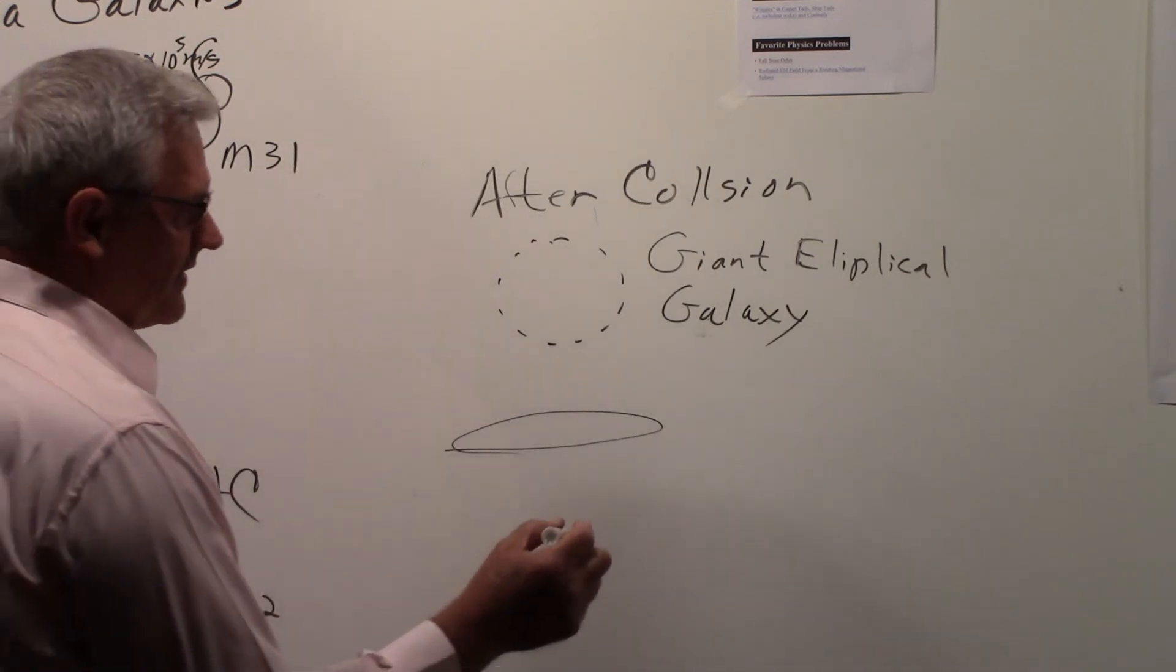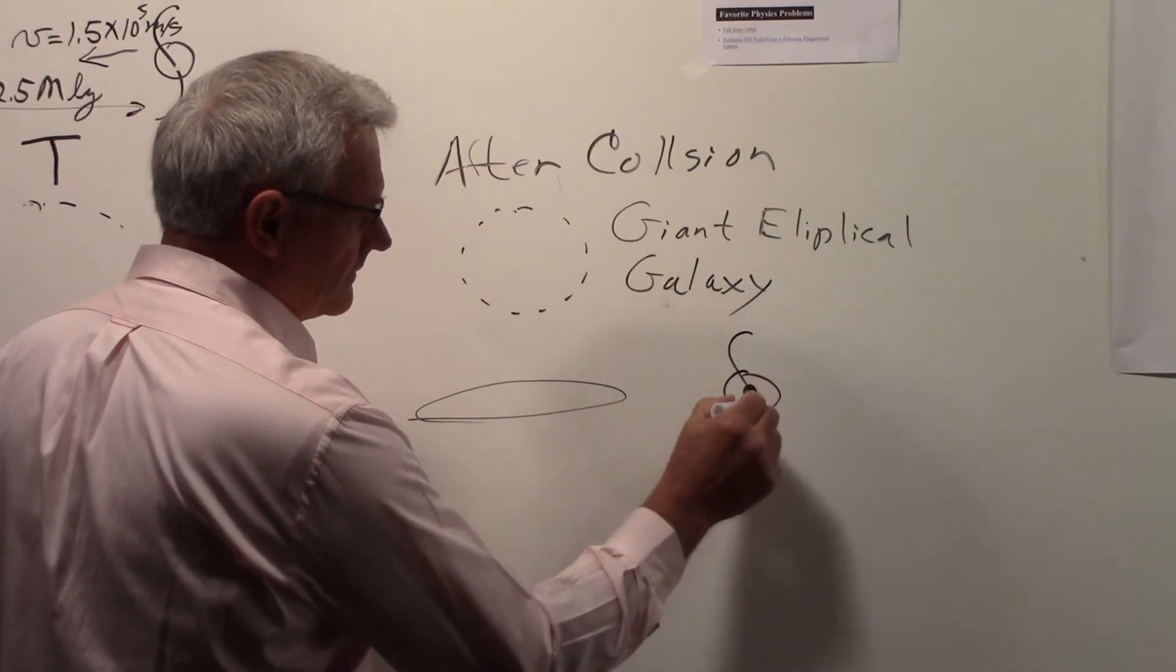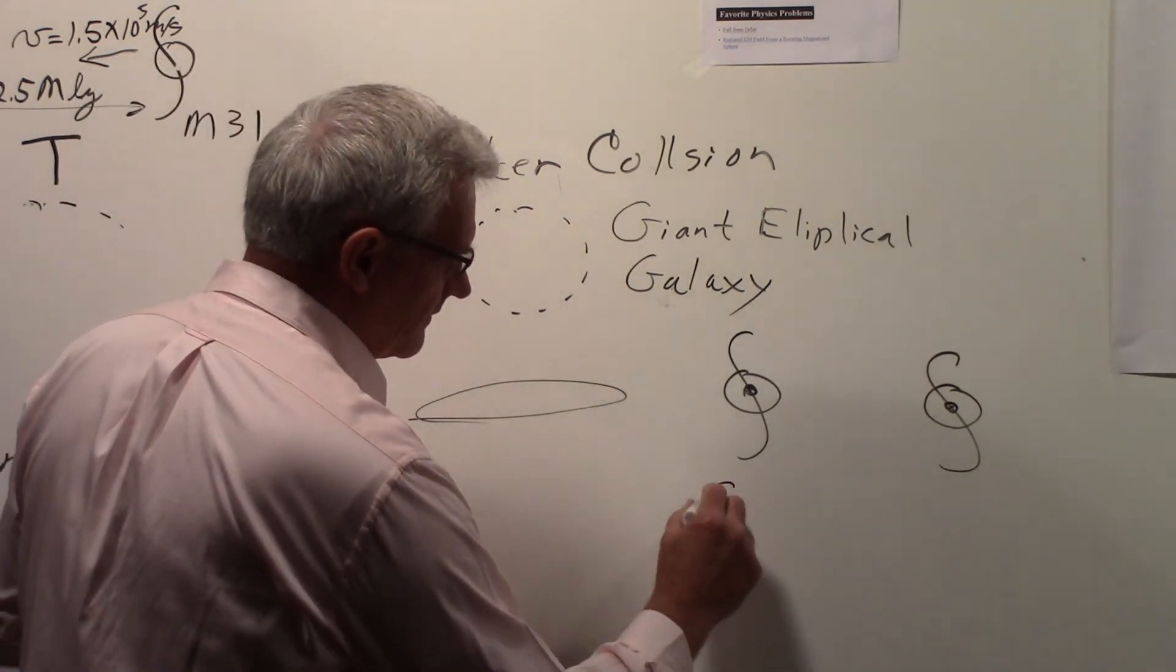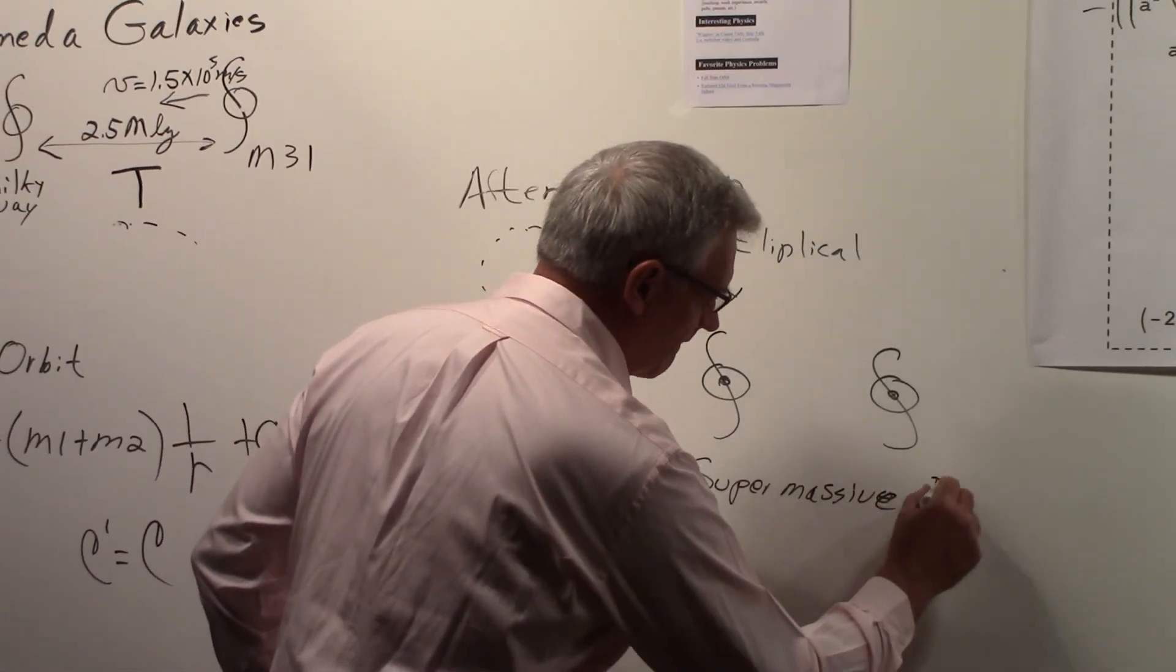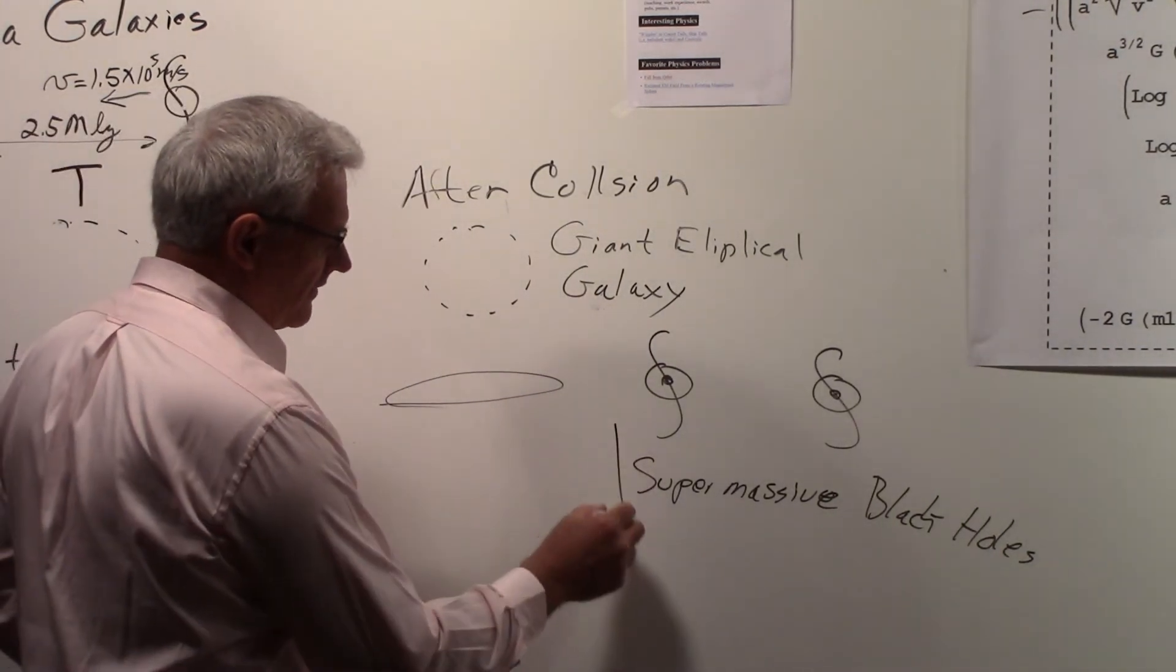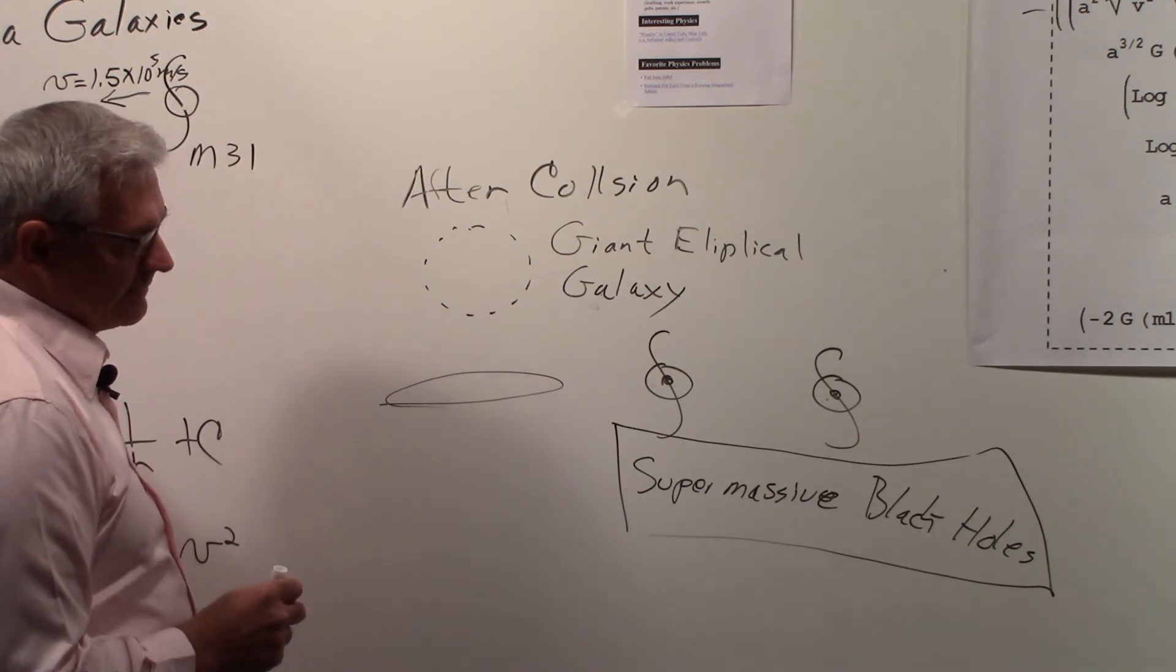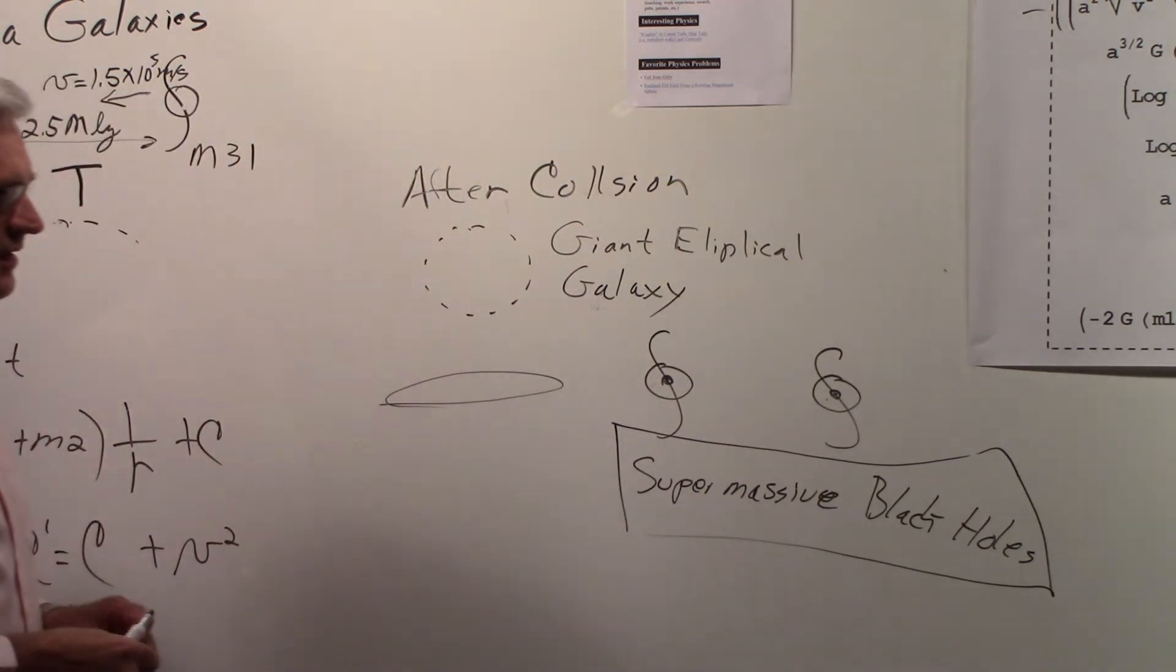But what I think might be really very interesting is in the center of the Milky Way and in the center of the Andromeda galaxy are supermassive black holes. And it would really be interesting to be around and see if those two supermassive black holes, one from the Milky Way, one from the Andromeda galaxy M31, what happens if these two supermassive black holes collide. The fireworks would be probably incredible.